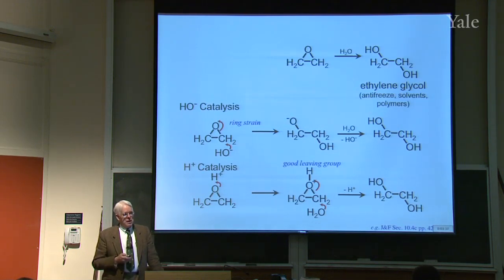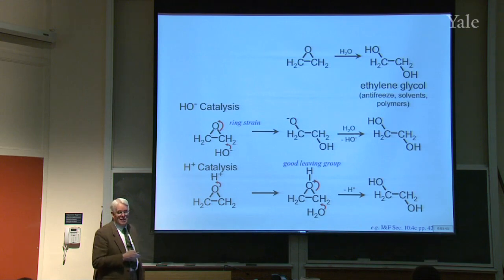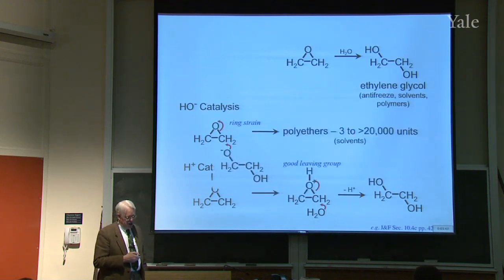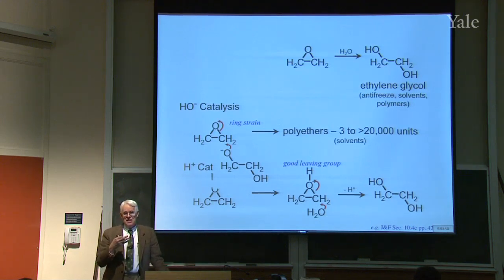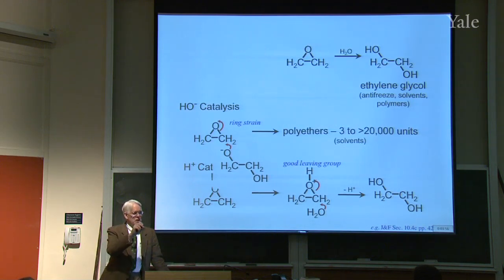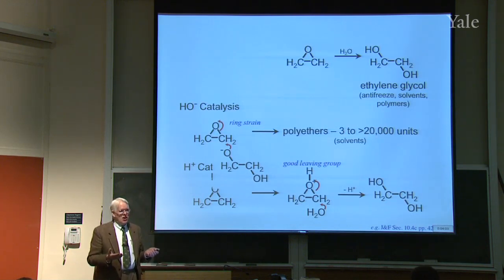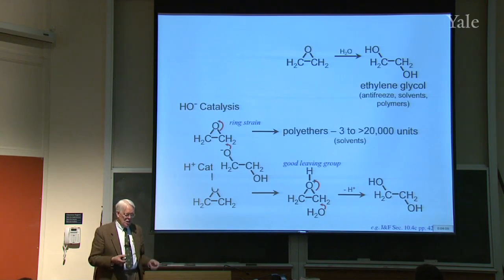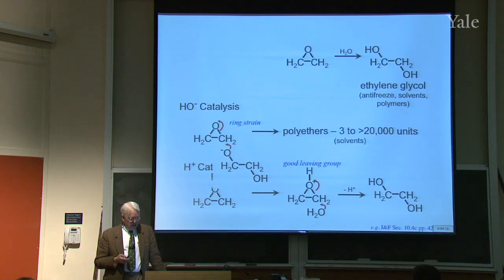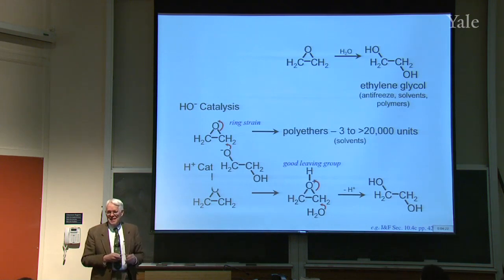Another possibility for a nucleophile is the O⁻ itself, which can attack another ethylene oxide, and then the new O⁻ can attack again. You can get a whole string of CH₂CH₂O units — a polyether. There can be as few as three (oligo) up to 20,000 units or more strung together. These are big items in commerce as solvents, also used in toothpaste, paintball, and many other applications.